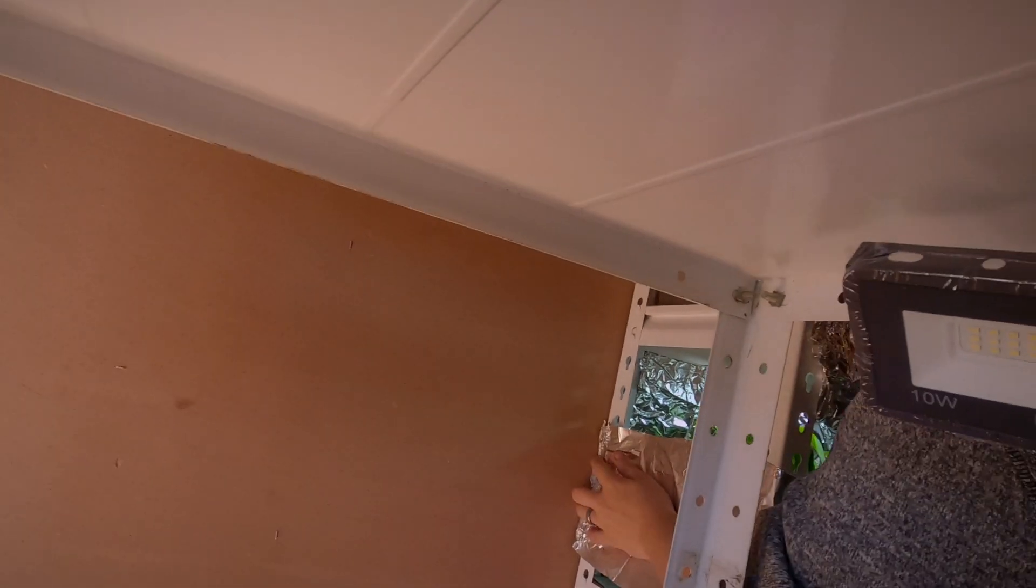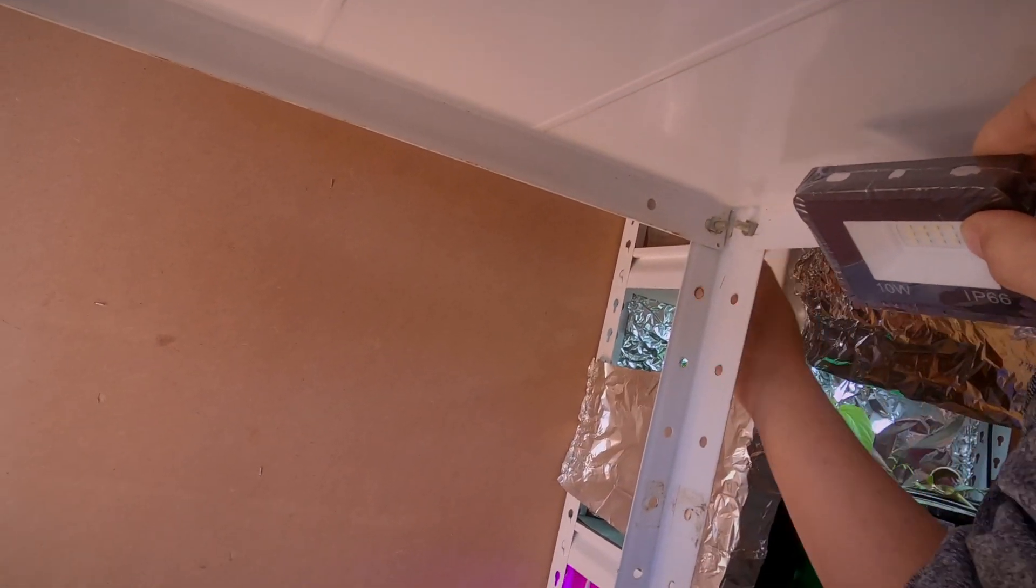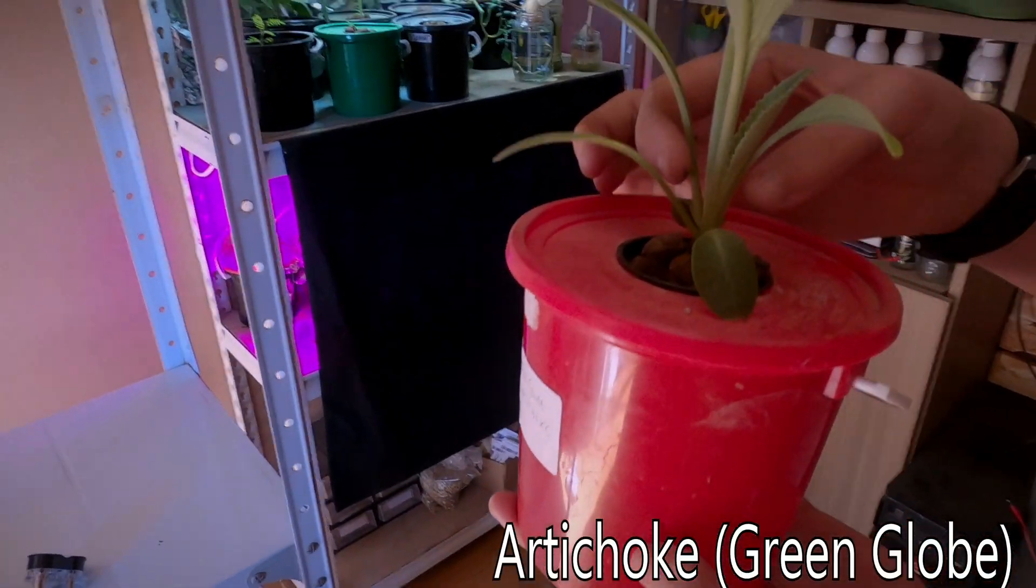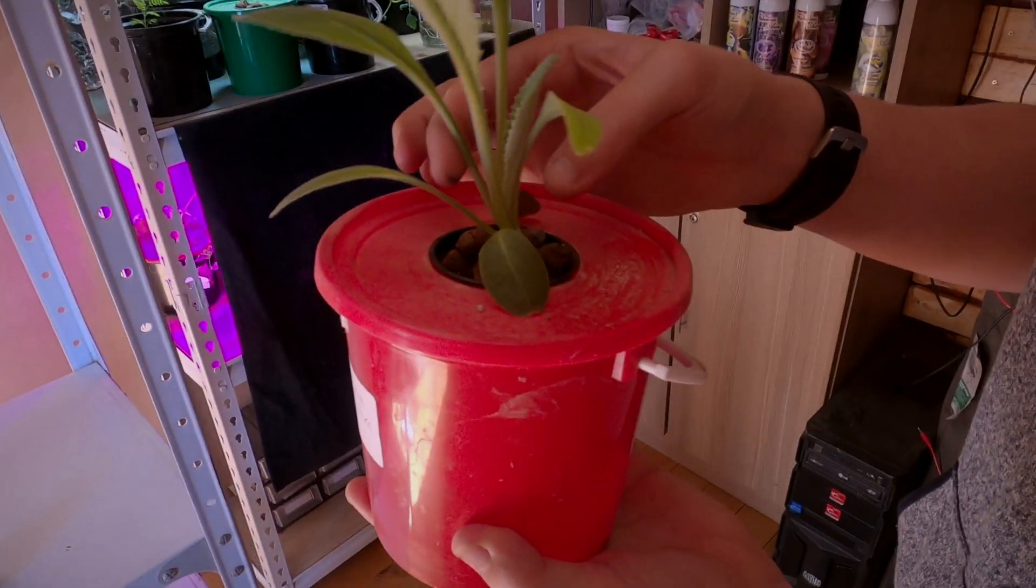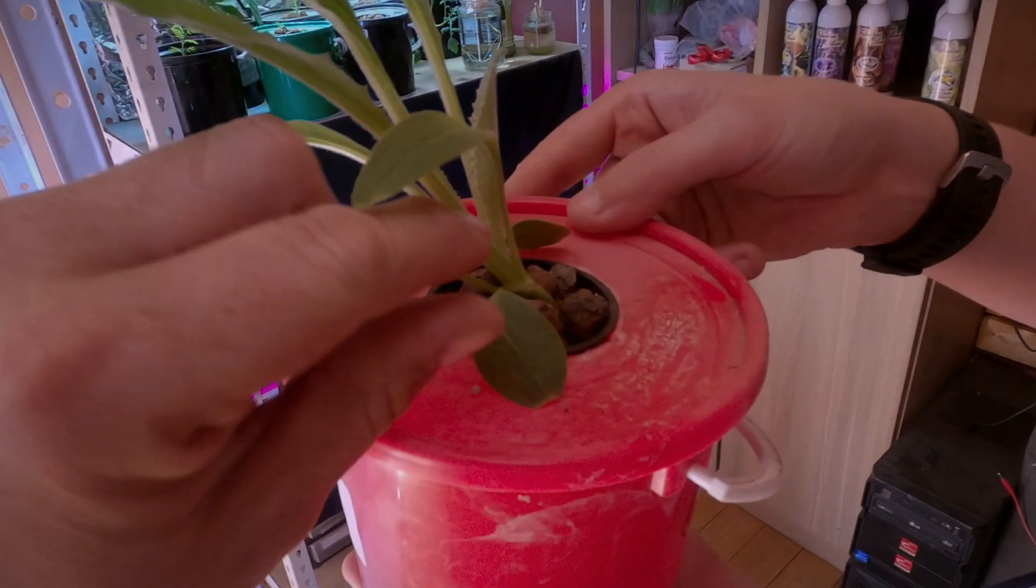We will have plenty of light to do another hydroponic shelf. This is green globe artichoke in a Kratky bucket. So we germinate the stuff in outside little containers, very easy. You put your seedling in there in clay pellets.